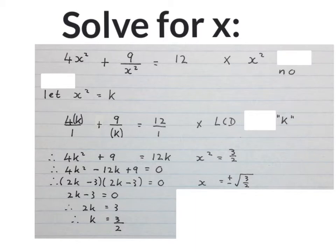To get rid of the square, we square root both sides. Just remember, then it becomes x equals plus or minus the square root of 3 over 2.